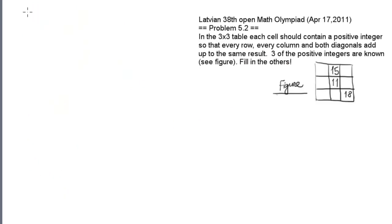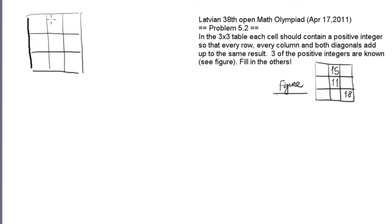Here we have to build a magic square having eight different sums adding up to the same number, using three given numbers. Let's introduce a variable: let's denote this by x. In that case the second column has 26 plus x, and any other column should also have the same sum. The only number I can write to add up to 26 plus x here is 8.